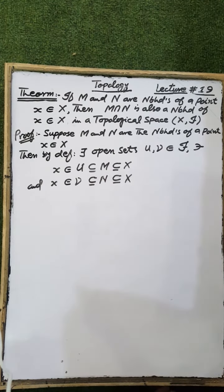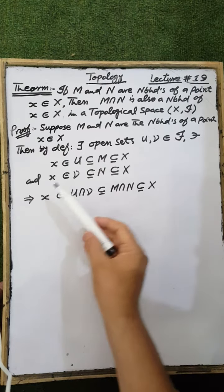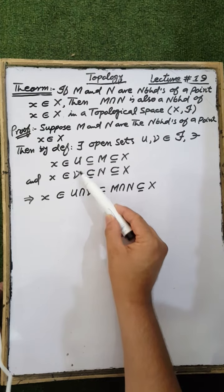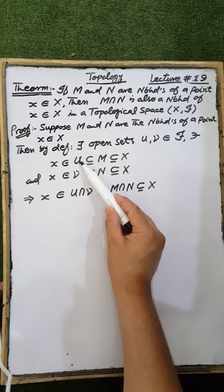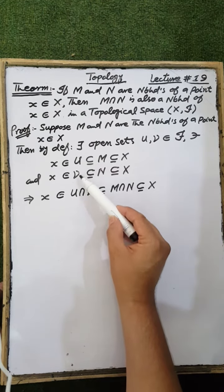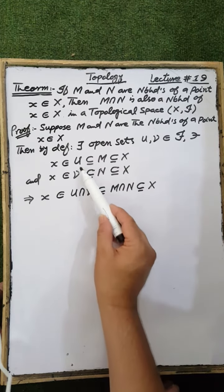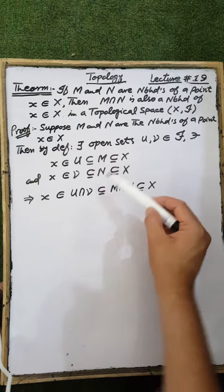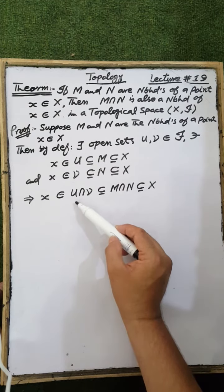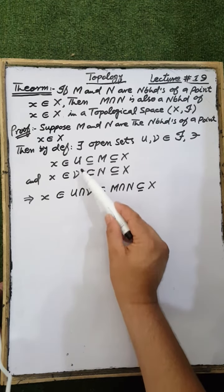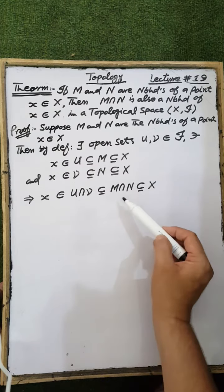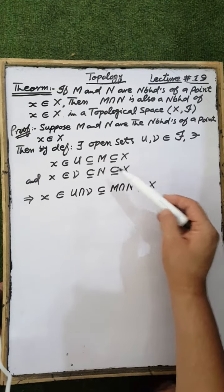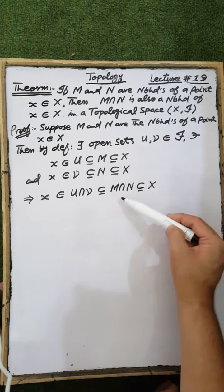That is, the element X is contained in both open sets U and V. Therefore, X is also contained in the intersection U∩V. Since U is a subset of M and V is a subset of N, the intersection U∩V is also contained in the intersection M∩N.